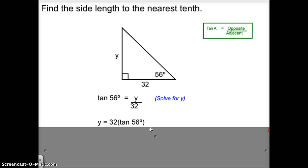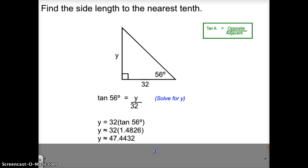From there, to solve for Y, we would multiply both sides by 32 and then find the tangent of 56 degrees as a decimal version from the chart, which is 1.4826. And then all you would have to do is multiply the two together and find that Y is approximately 47.4.